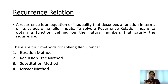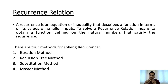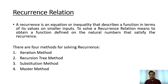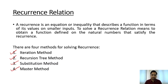Since we write a recursion function and don't know how many times it is running, the equation that captures the base condition and recursive calls is called the recurrence relation. To solve a recurrence relation we have four methods: the iteration method, the recursion tree method, the substitution method, and the master theorem.